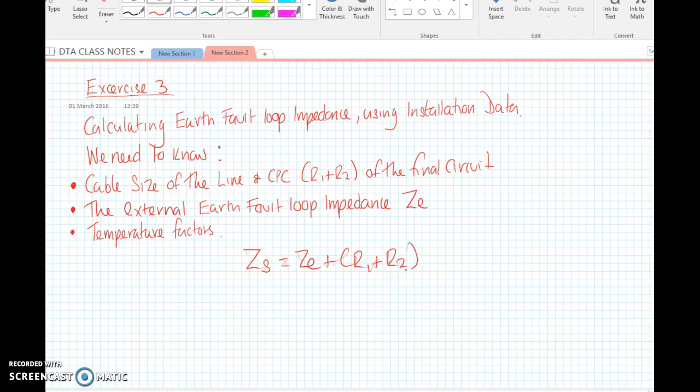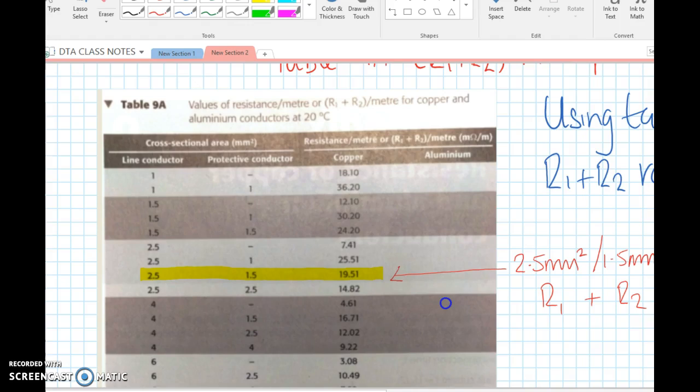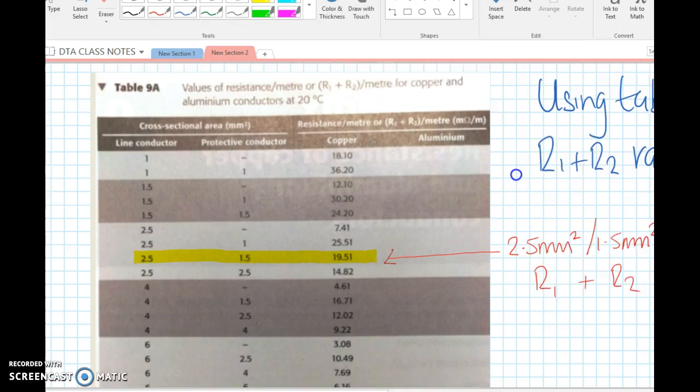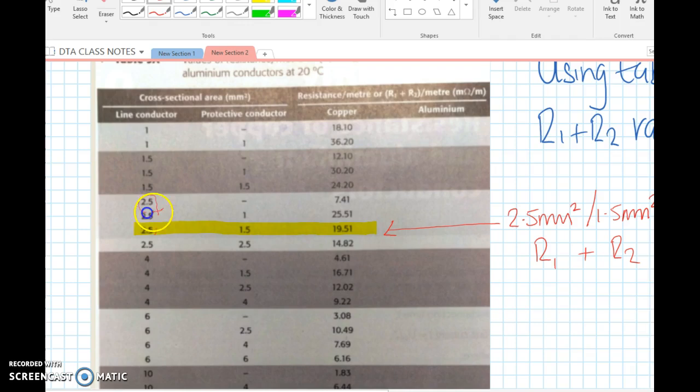Previously when we've looked at earth fault loop impedance, we've written the formula down as ZE plus R1 plus R2. What we're going to do this time is we're going to add a couple of temperature correction factors. This is table 9a, taken from the IET on-site guide.